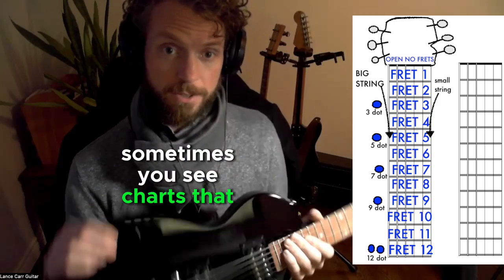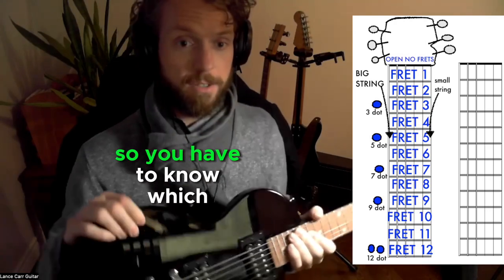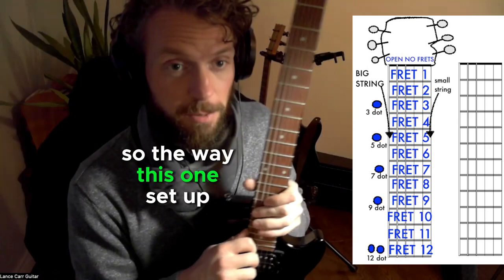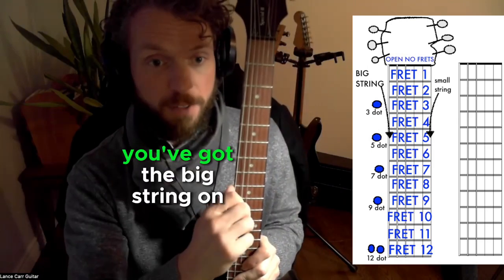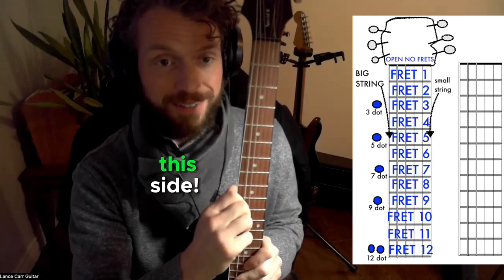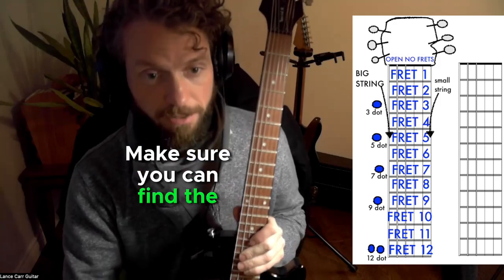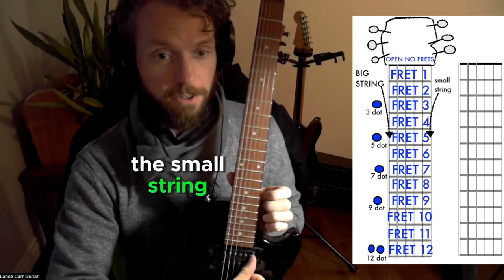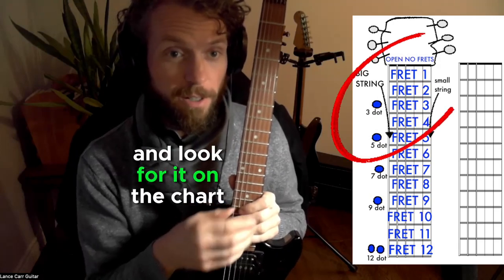Sometimes you'll see charts that are off to the side, one way or the other, so you have to know which string is big, which one is small. So the way this one's set up, going upright, you've got the big string on this side. So make sure you can find the big string on your guitar, and make sure you can find the small string on your guitar, and look for it on the chart here.